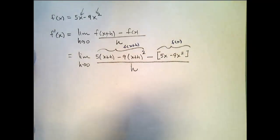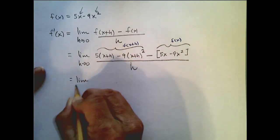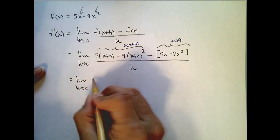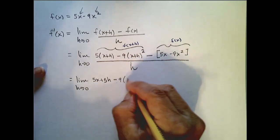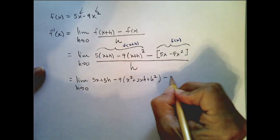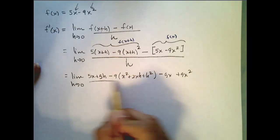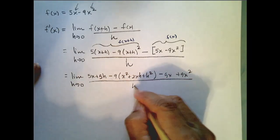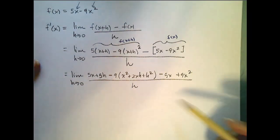Now, before I take the limit, if I were to try to plug in h right now, I would get 0 over 0, and that tells you you need to do more work. So we're going to do some algebraic simplification. So we're going to take the limit as h goes to 0, 5x plus 5h minus 9 times x squared plus 2xh plus h squared minus 5x plus 9x squared. I'll distribute that negative, all over h. Remember, when watching these videos, if at any point you want to pause it and look at what I've done, please do so.